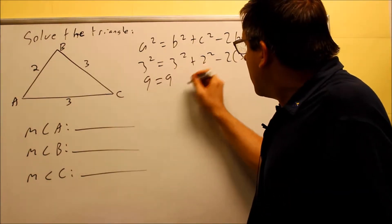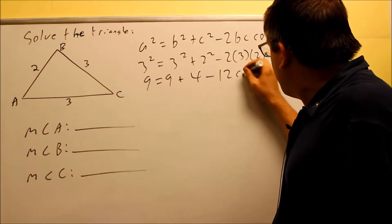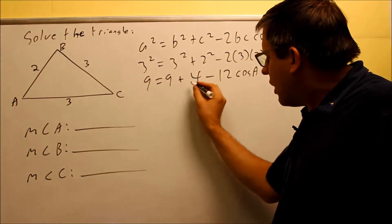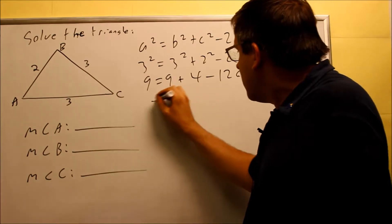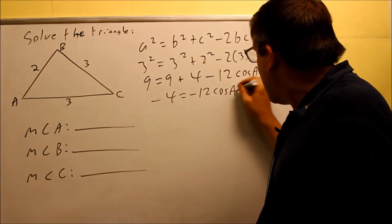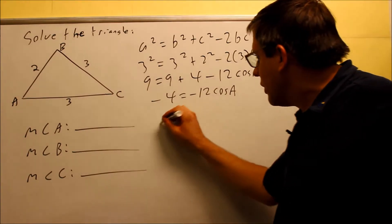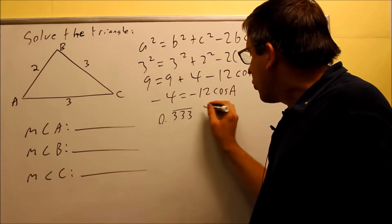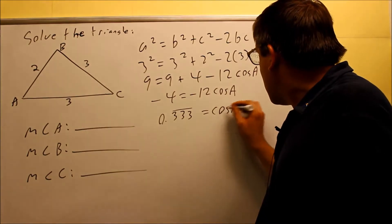So: 9 equals 9 plus 4 minus 12·cos(A). The 9's cancel, and bringing the 4 over gives negative 4 equals negative 12·cos(A). Dividing both sides by negative 12, I get 0.333 repeating, and that equals cos(A).